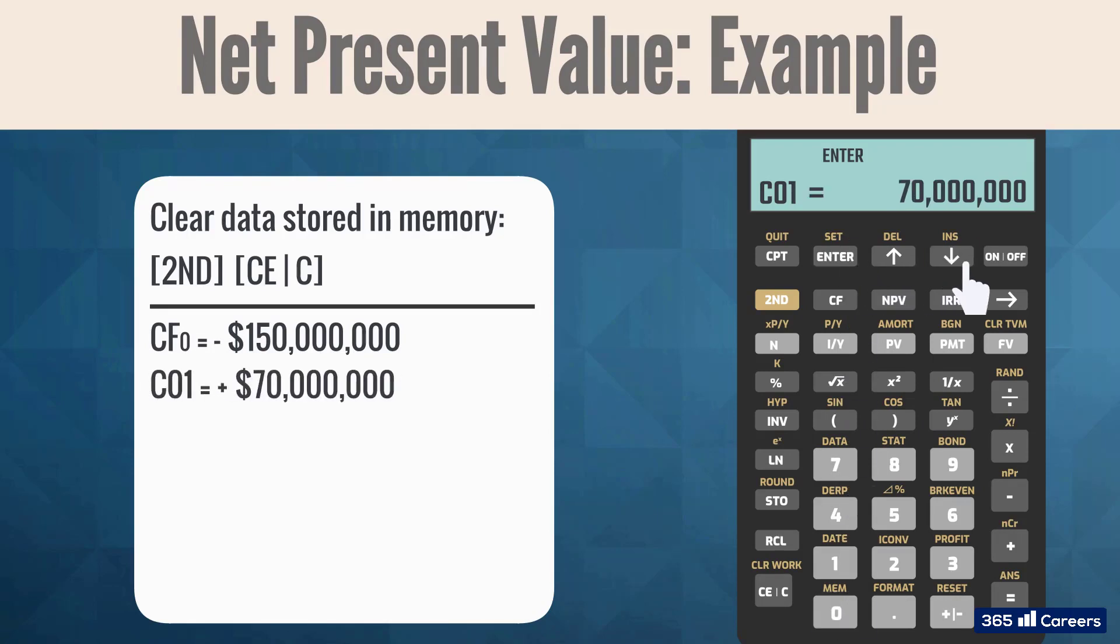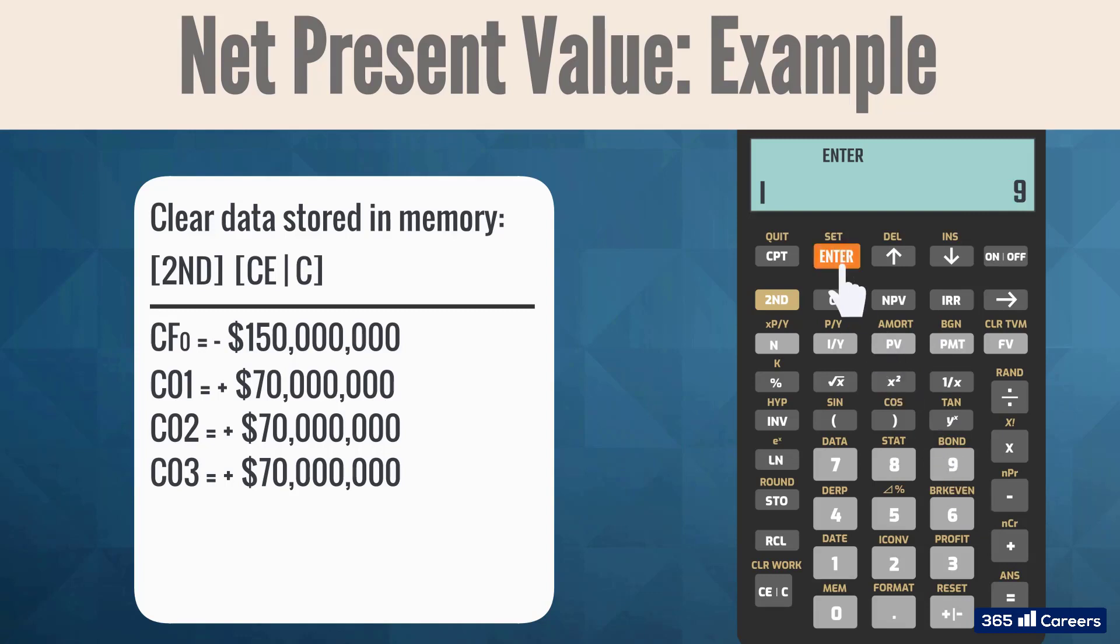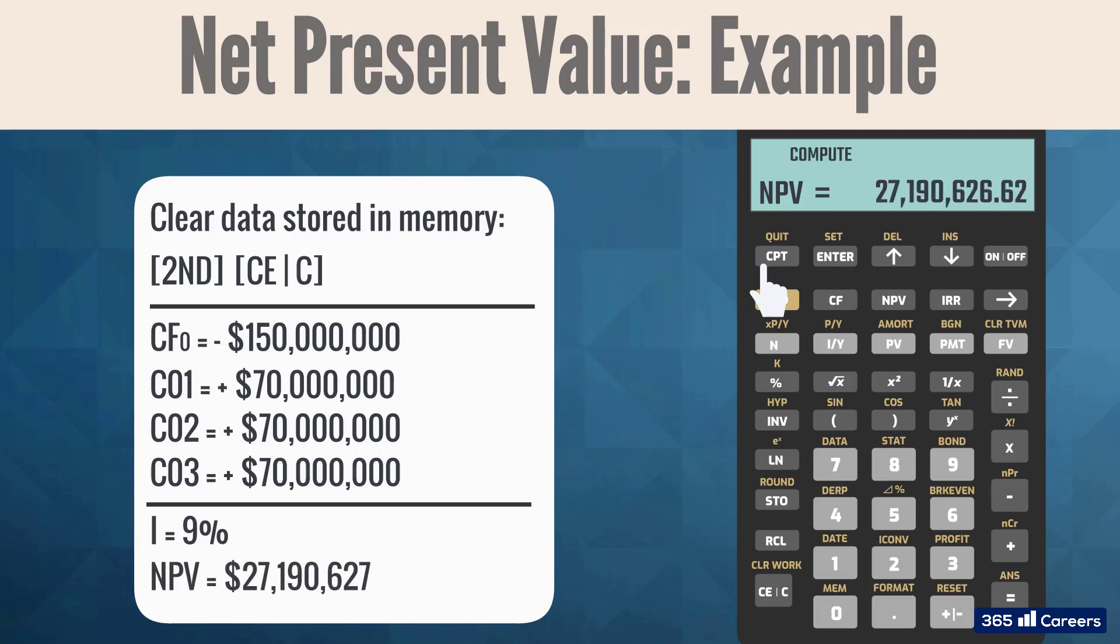Here, instead of entering the next two flows manually, we can simply change the cash flow frequency from 1 to 3 because their amount is the same as that of the first cash flow. In the end, we enter NPV mode. The discount rate, I, is equal to 9%. And now, we can easily compute NPV and obtain $27,190,627.